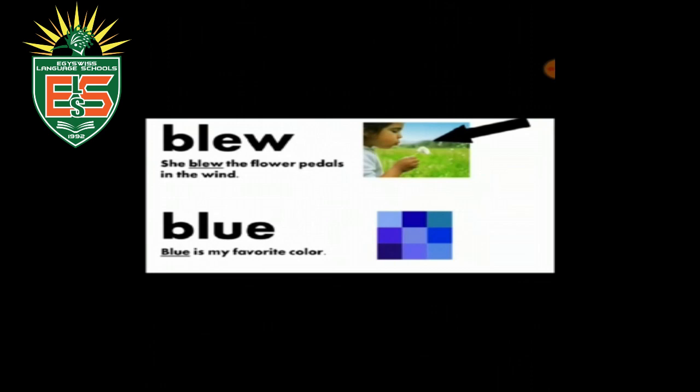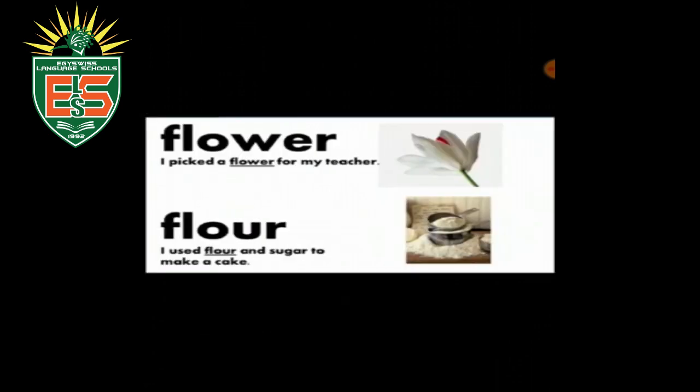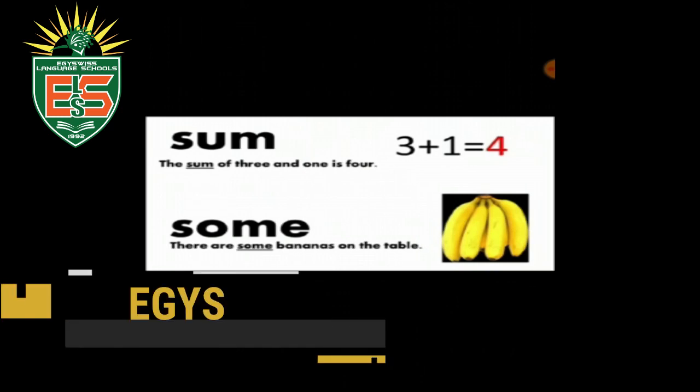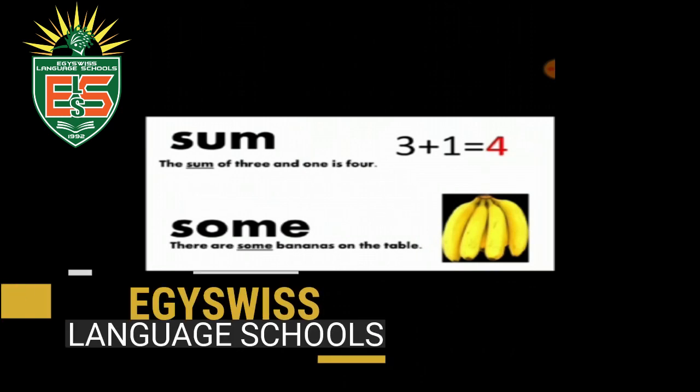'Blew' — she blew the flower petals in the wind. 'Blue' — blue is my favorite color. 'Flower' — I picked the flower from my teacher. 'Flour' — I used the flour and sugar to make a cake.